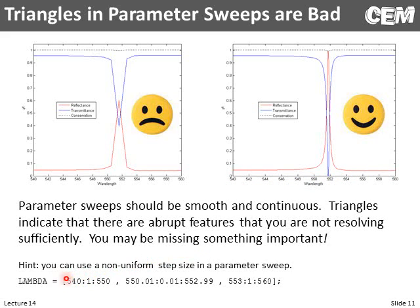For example, from 540 to 550 nm you might go in steps of 1, but from 550 to 553 nm you go in steps of 0.01, and then back to steps of 1 again — to generate a plot that looks nice and smooth. Or you could just have fine points everywhere.